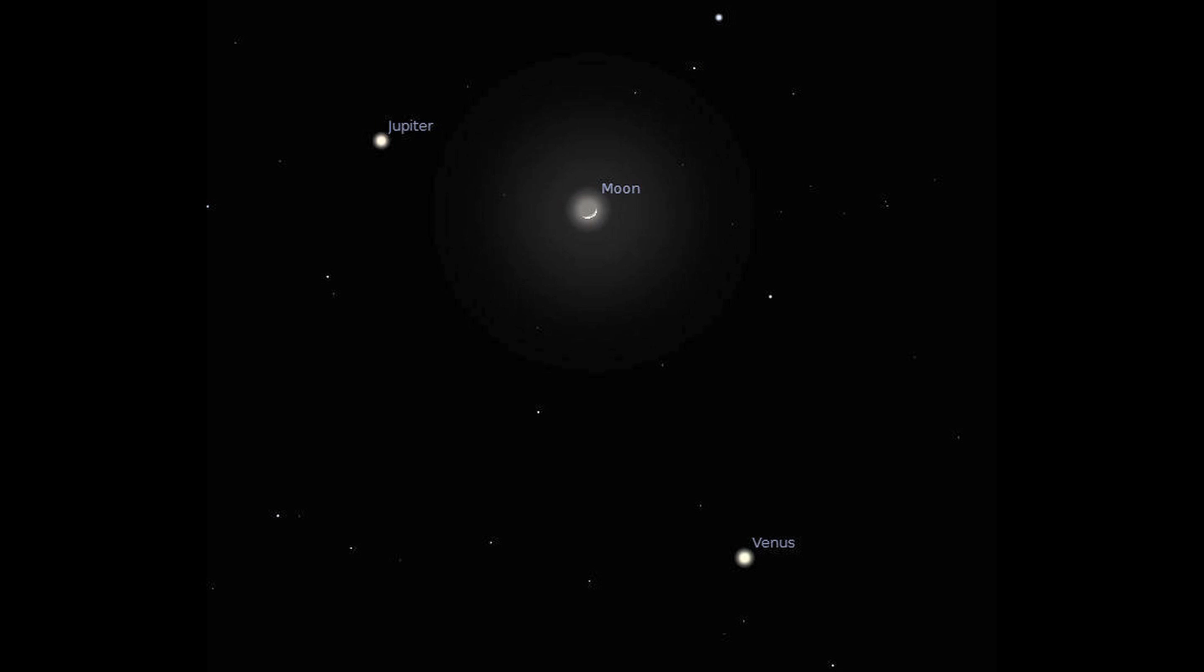And then into March, the two planets will come together, the moon will be out of the way. So if you do get any nice images of Jupiter and Venus coming together, please send them along and we'll try and show them in the next edition of Let's Talk Astronomy.